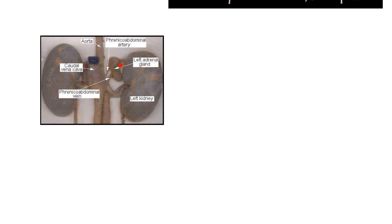Here's the adrenal gland — here's the left. Most of the time when you're dissecting an animal, it's in dorsal recumbency and the right side of the picture is actually the left side of the animal. Here's the left adrenal. Notice it's not on the cranial pole — that's how it is in humans, but in a lot of animals, sometimes it's in between the main blood vessels, the aorta and the vena cava, and the kidney.